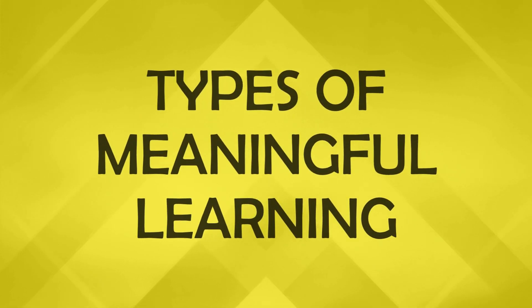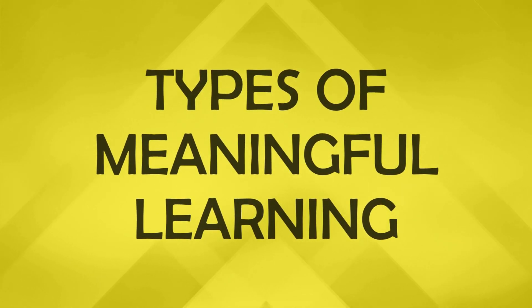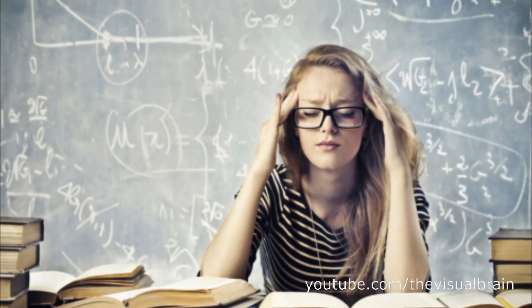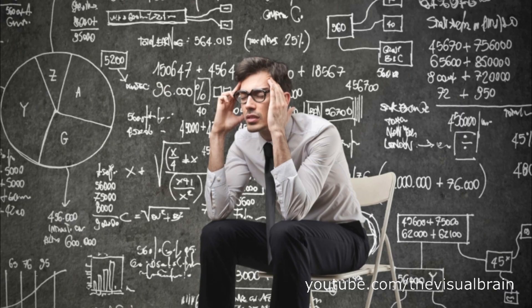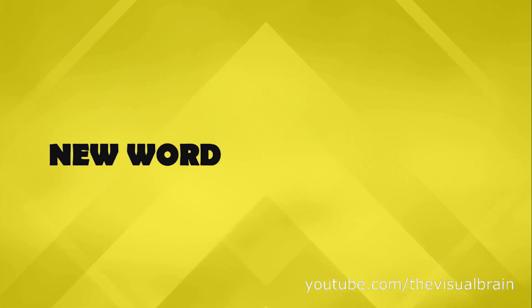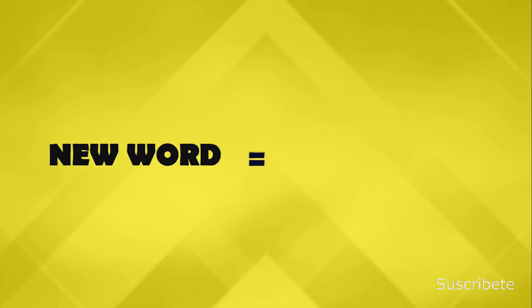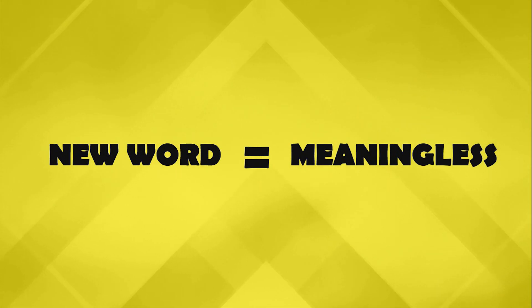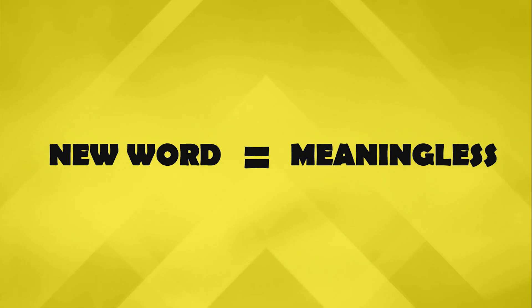Another point to keep in mind is that Ausubel distinguishes between three types of meaningful learning. The first is concept formation, which involves retaining the names of words and other symbols and associating them with what they represent. When one learns a word, it is meaningless without knowing what it represents, since it could have been called otherwise.